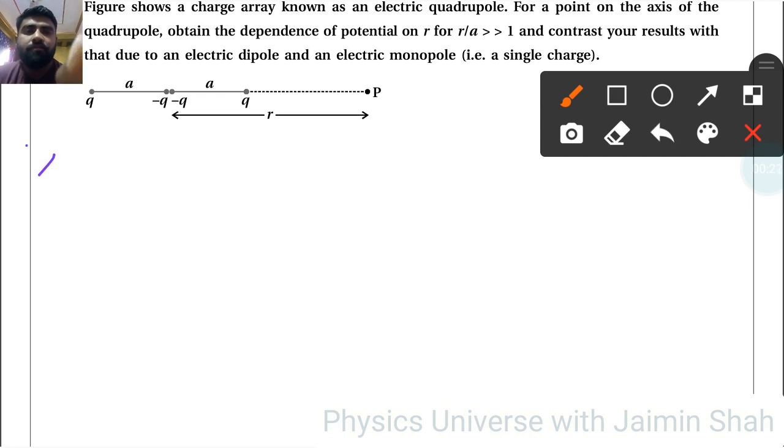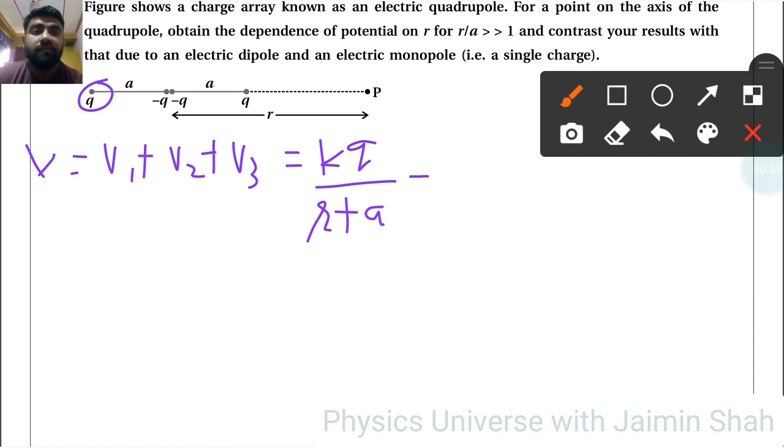First of all, see potential at P point. So V is equal to V1 plus V2 plus V3 due to three charges. For first KQ upon R plus A, then minus K, it is 2Q because both charges are on same point, so 2Q upon R, plus KQ upon R minus A.